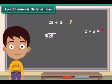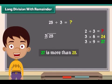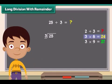We know 3 multiplied by 8 is 24, and 3 multiplied by 9 is 27. 27 is more than 25. So we will take 3 multiplied by 8, which is 24. So put 8 right above 25 and put answer below 25. Now subtract.